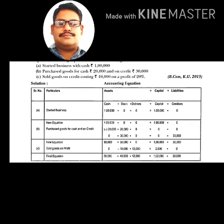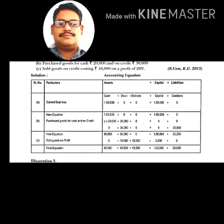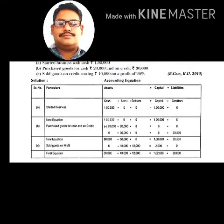Goods sold on credit at 20% profit: goods decrease by ₹10,000 (cost), debtors increase by ₹12,000 (selling price), and profit of ₹2,000 is added to capital. Final equation: Cash ₹80,000 + Stock ₹40,000 + Debtors ₹12,000 = Capital ₹1,02,000 + Creditors ₹30,000. Total both sides = ₹1,32,000. That's all for today, thank you.